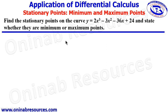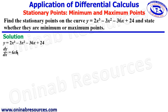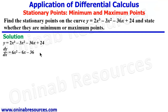So we start the solution of the problem. We have the function y equal to 2x cubed minus 3x squared minus 36x plus 24. First, we find the first derivative. So dy/dx is going to be 6x squared minus 6x minus 36. The derivative of the constant 24 is 0, so that term disappears.